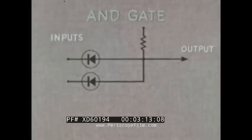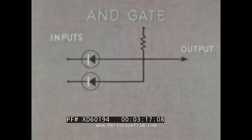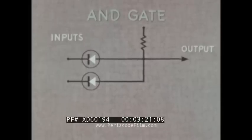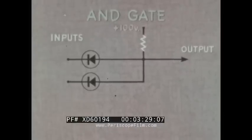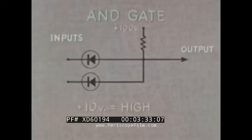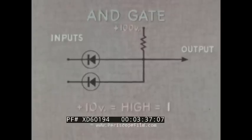The AND circuit is made up of two or more diodes and a resistor. The cathodes receive the circuit inputs. The anodes — counterparts of the plates in vacuum tubes — are connected to the resistor, which is returned to a relatively high voltage, say plus 100 volts. Plus 10 volts may be the high input voltage, binary one, and zero volts the low, binary zero.